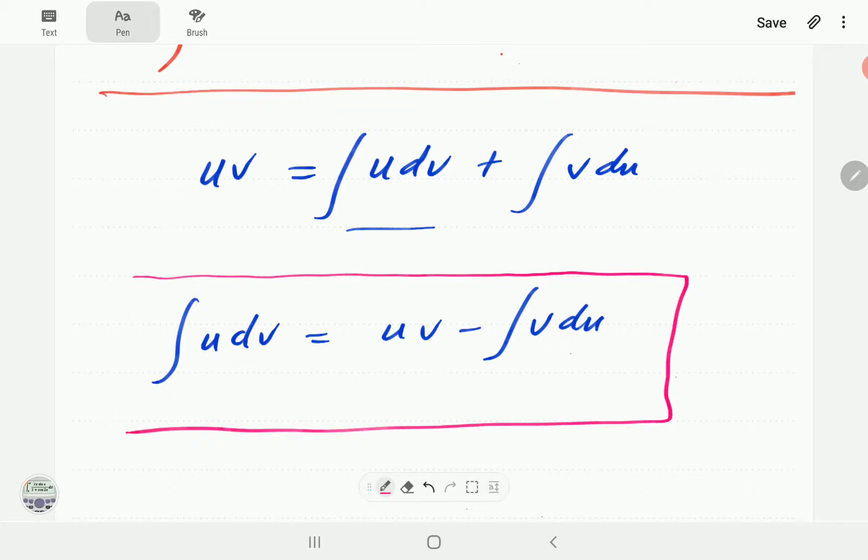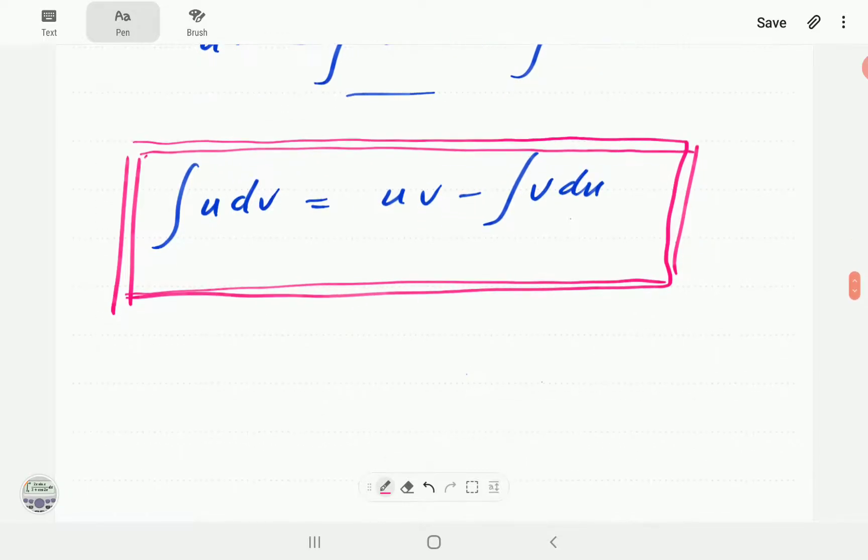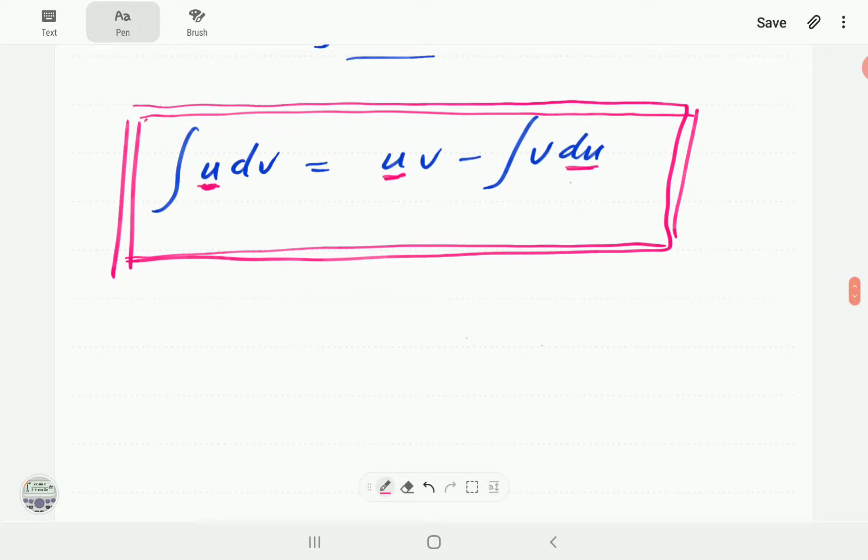So what this approach does is it divides the integral into two parts. The one part it integrates, the other part it differentiates. That is why it is called integration by parts, because if you look at the left hand side we have u which we have the same thing here, and then we've got dv. du is the derivative of u.